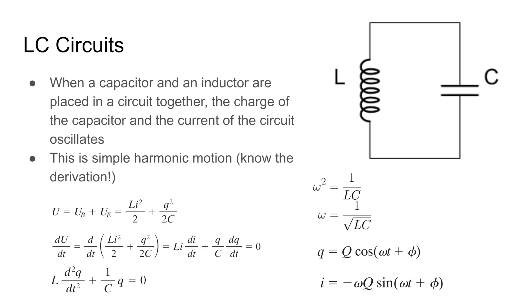we get the charge and the current. The charge over time is equal to the maximum charge times cosine of omega T plus phi, where omega is 1 over root LC, and phi is the initial condition. And we can find I by taking the derivative of Q over time, and we get negative omega Q times sine omega T plus phi. All you really need to remember about LC circuits is that it's simple harmonic motion with the angular frequency equal to 1 over the square root of LC, where L is the inductance and C is the capacitance.